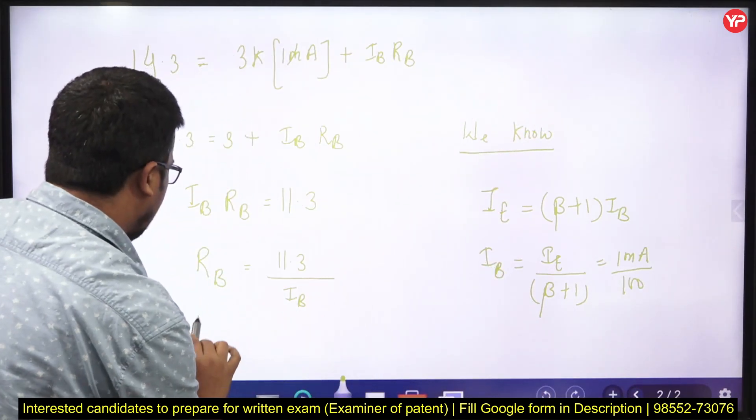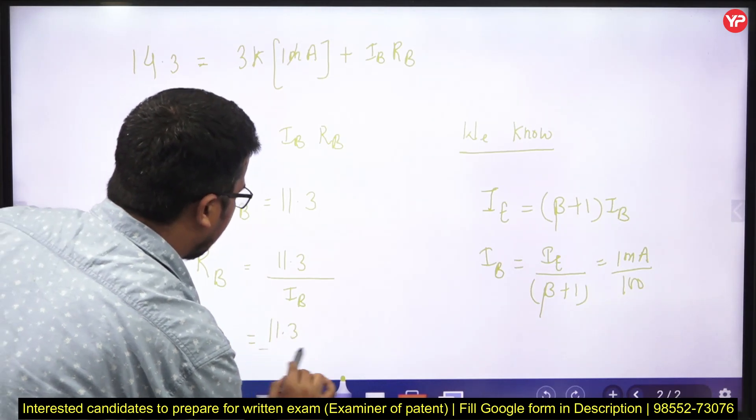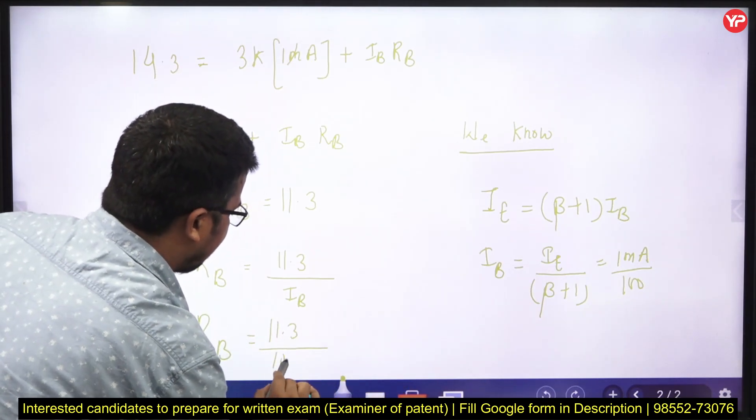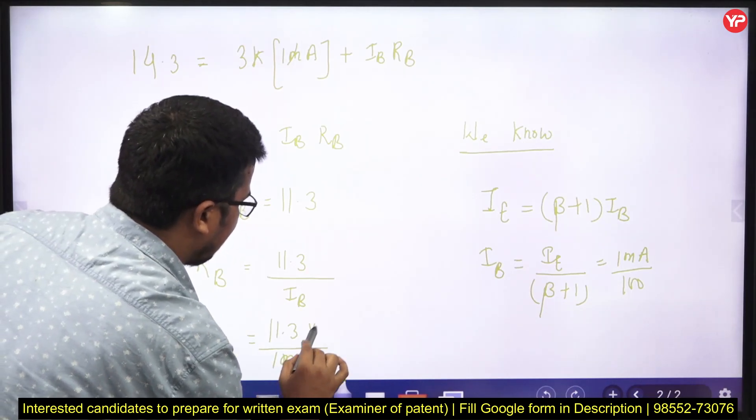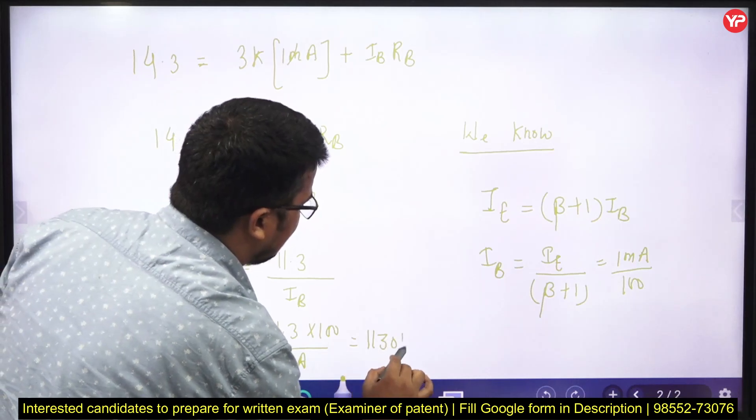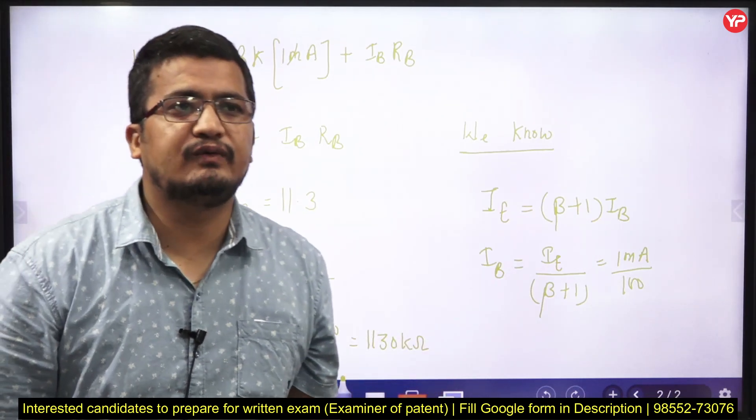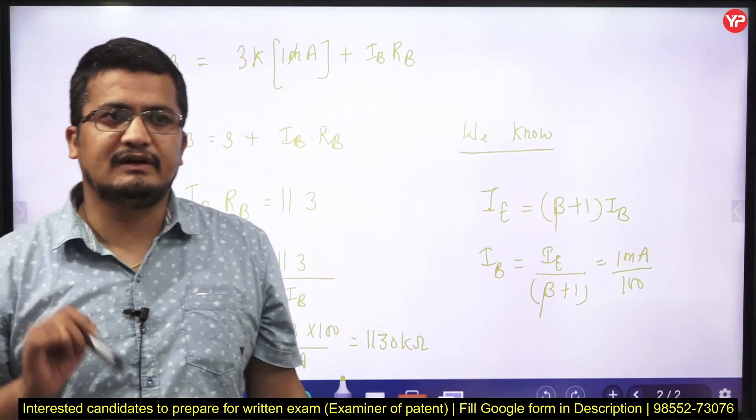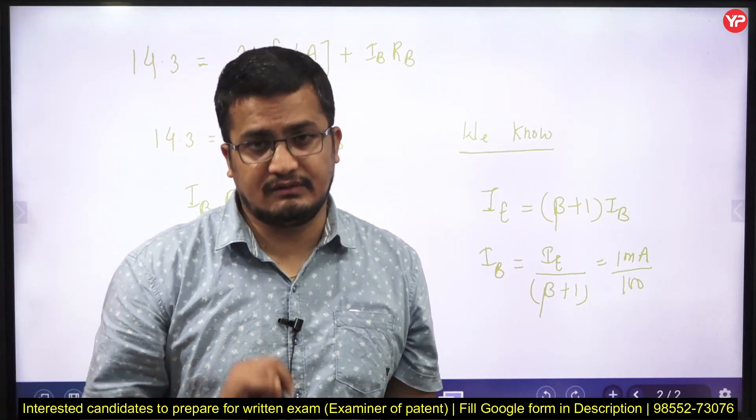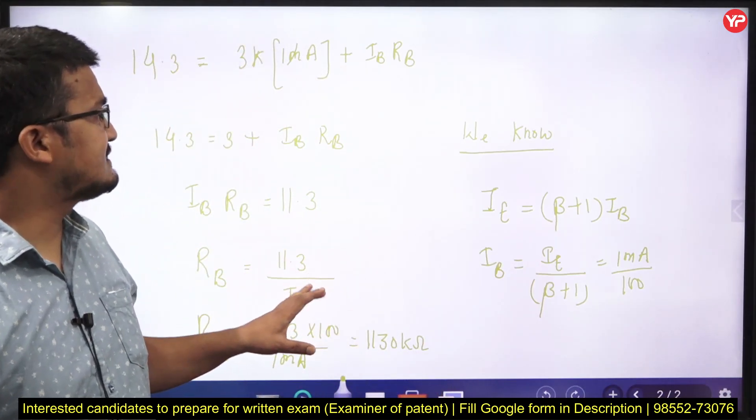I am putting it here. RB I will be getting equal to 11.3 upon, instead of IB, 1 milliampere multiplied by 100. I will end up getting around 1130 kilo ohm, the answer. This is the exact analysis. You need to follow each one and every step out there while solving the question. This was the conventional question being asked.